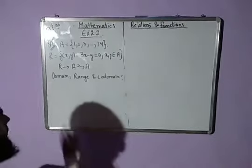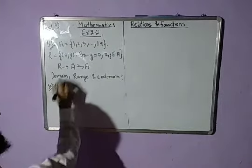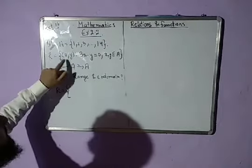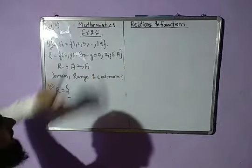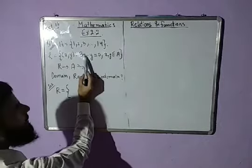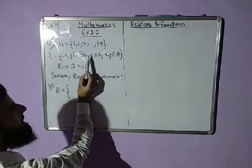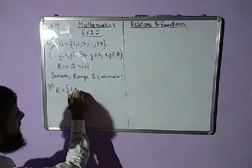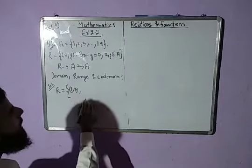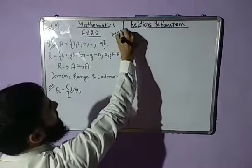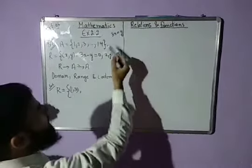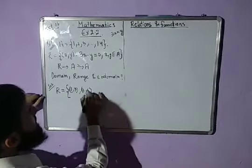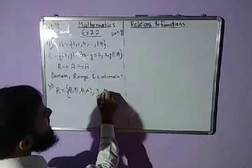Solution: Let's write the relation R in roster form. Taking x and y both from A: when x equals 1, we get 3 minus y equals 0, so y equals 3, giving us (1, 3). The rule simplifies to y equals 3x. So when x equals 2, y equals 6, giving (2, 6). When x equals 3, y equals 9, giving (3, 9).